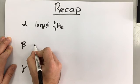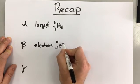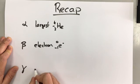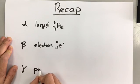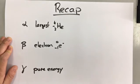Beta is just an electron, and gamma is just a ray. Gamma is just pure energy released as a wave.